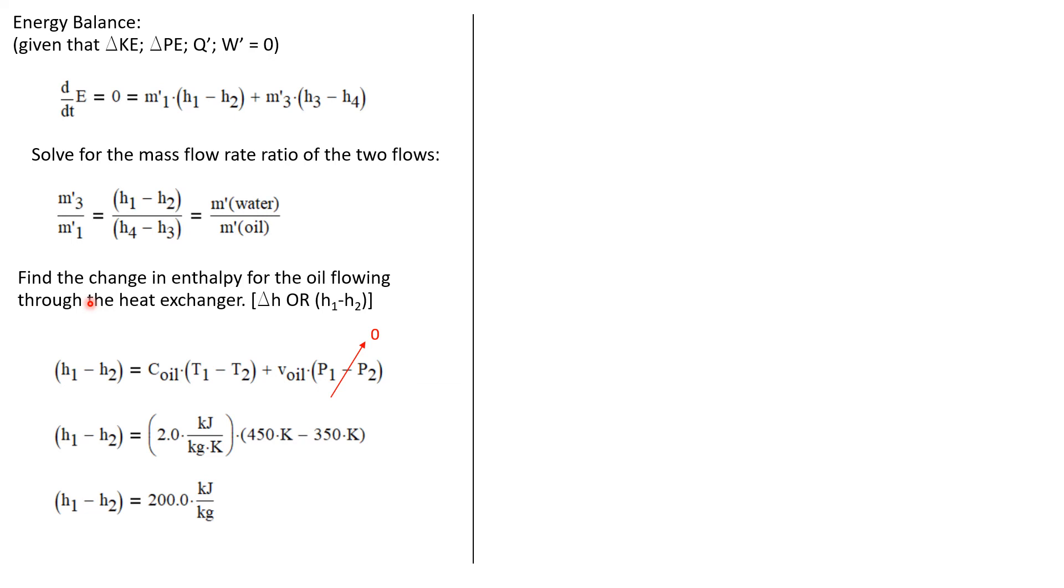Now let's find the change in enthalpy for the oil. So we can say Δh for the oil, or in this case specifically, that's h₁ - h₂. We know that for a subcooled liquid, which is what the oil is, it's just C times ΔT plus V times ΔP. But there was no change in pressure for the oil, so that term is eliminated. And we're left with just simply that h₁ - h₂ is the specific heat of the oil times T₁ - T₂. We were given this specific heat. We know the inlet temperature is 450K. We know it's discharged at 350K. So we know for the oil, h₁ - h₂ is 200 kJ/kg.